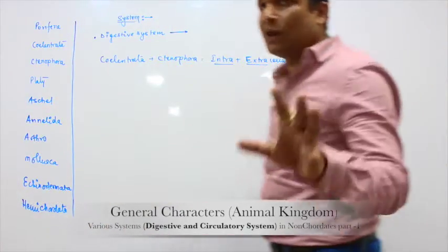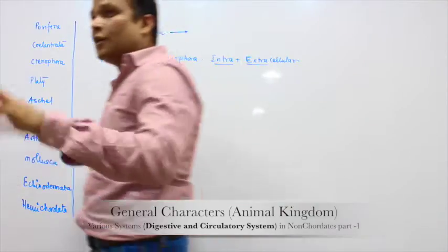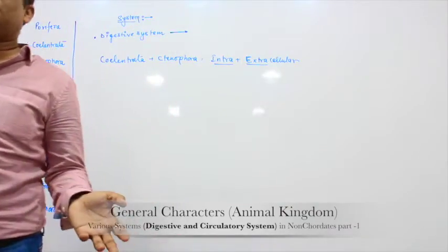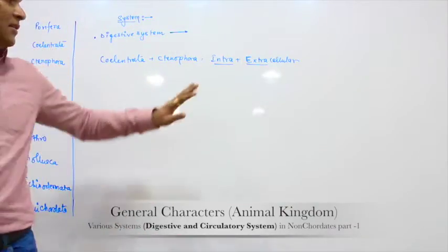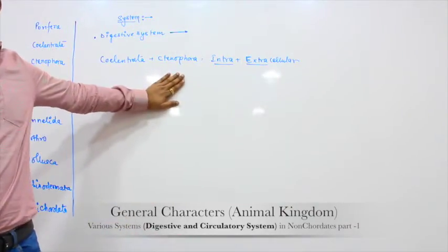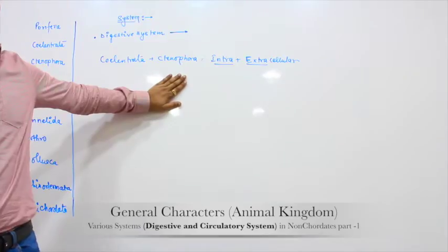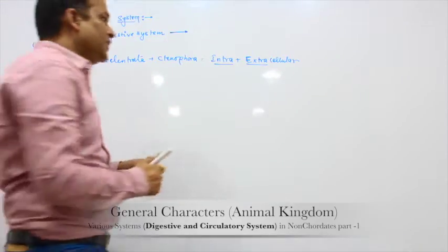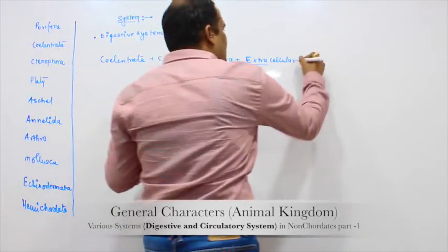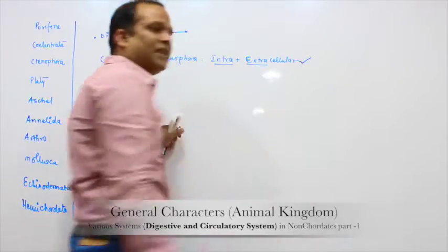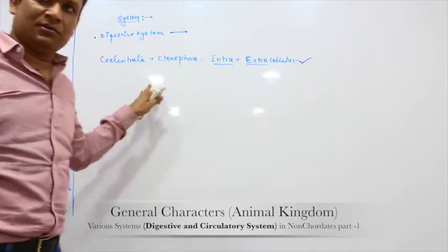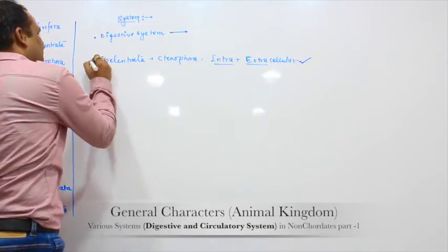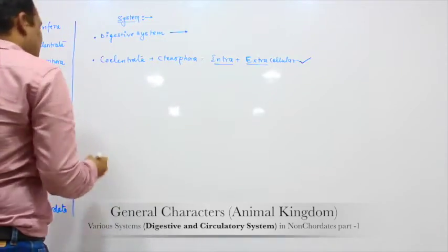So if it is asked — in which phylum are both intra and extracellular digestion found — the best phylum is Coelentrata and Ctenophora. Clear? Important line because this is the line from the textbook. Intra as well as extracellular digestion is found in Coelentrata.